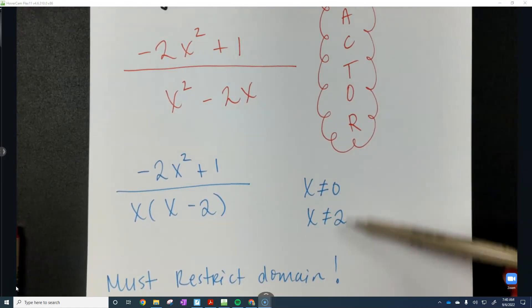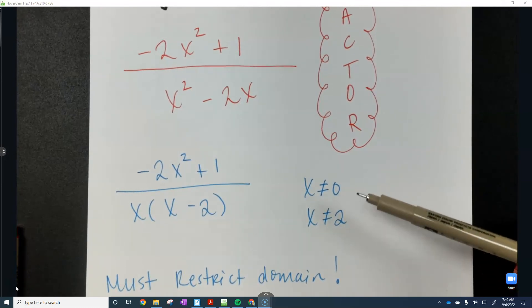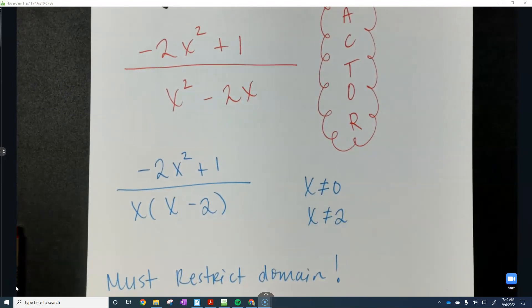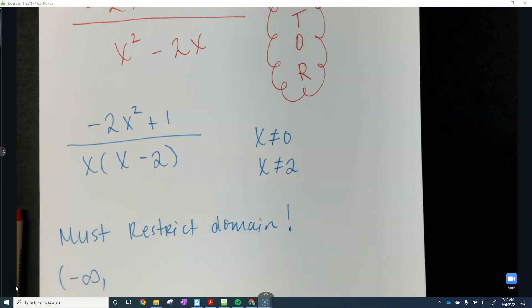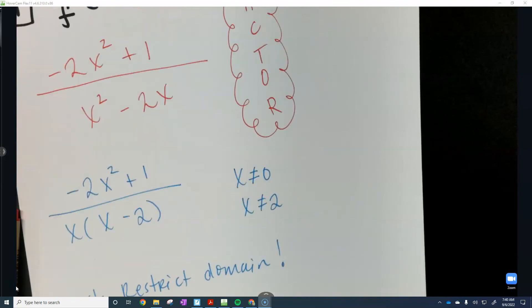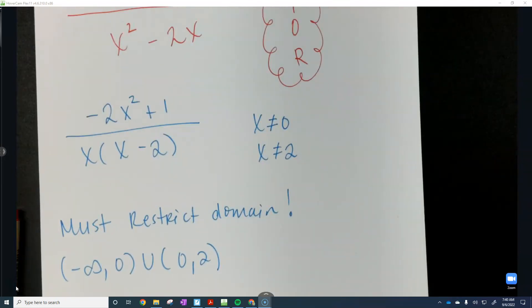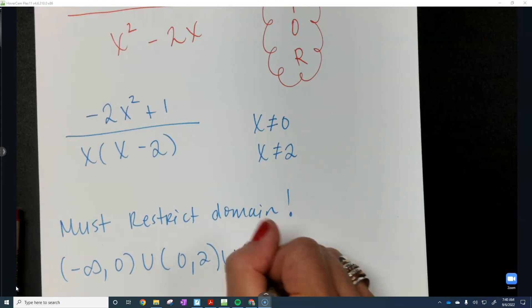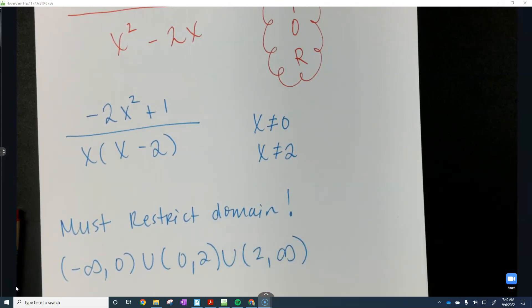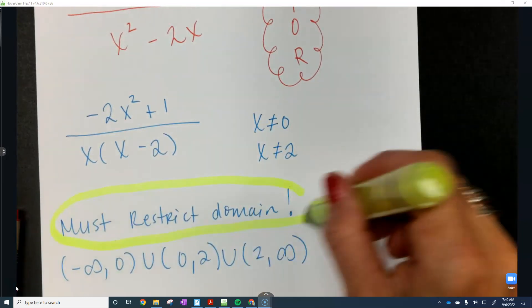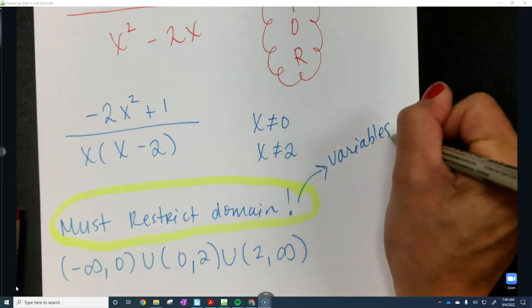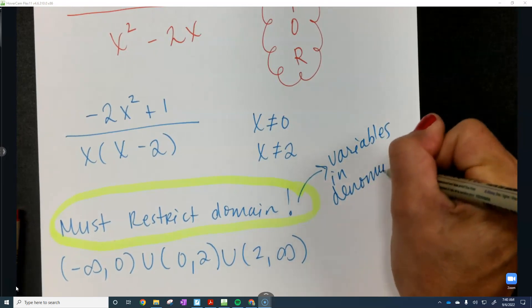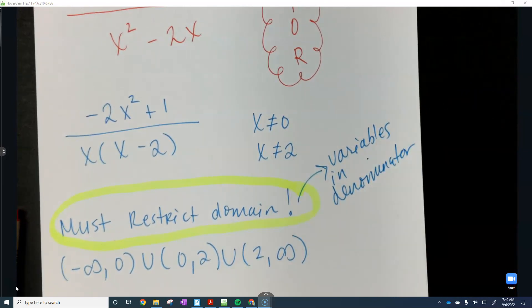So remember, these are what they cannot be. We have two things that we need to exclude, which means we're going to have three pieces for our domain. So your domain is going to be negative infinity all the way up to 0. We're going to go right past 0 to the number 2. And then we're going to wrap up our domain right after the number 2, and it could be all the way to positive infinity. So remember, if you have variables in the denominator, you always have to restrict the domain. Do you guys have any questions?